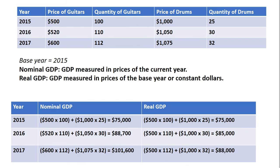Finally, in 2017, we take the output in 2017 and multiply it by the base year price, which is the 2015 price. So $500 times 112, and then we add to that the price of drums times quantity of drums, where the price of drums is the 2015 price once again. We see here that real GDP is slightly higher at $88,000. So once again, the economy has experienced some growth from 2016 into 2017.